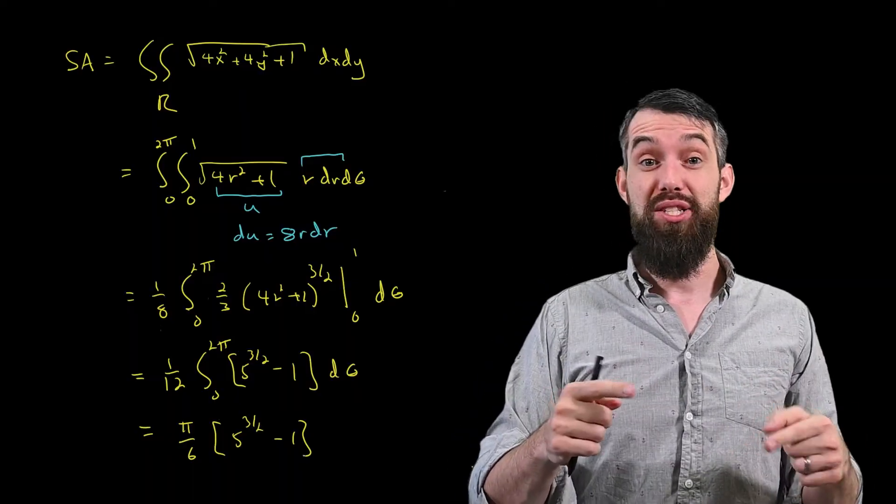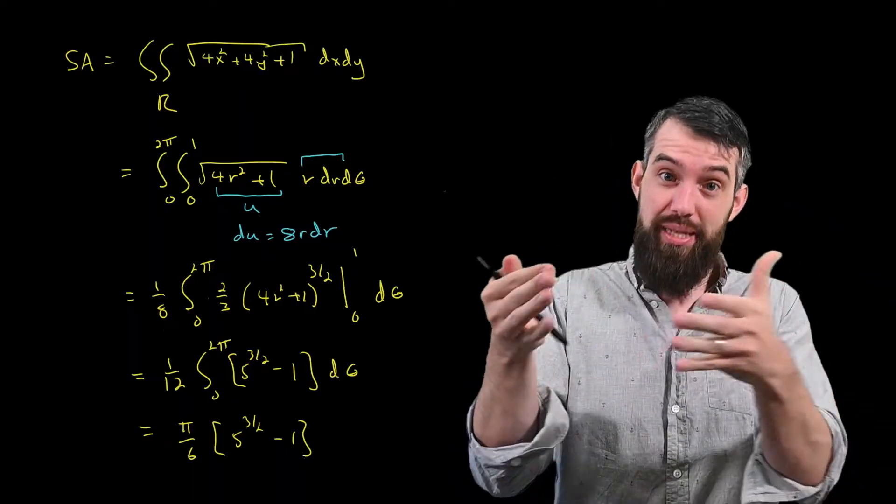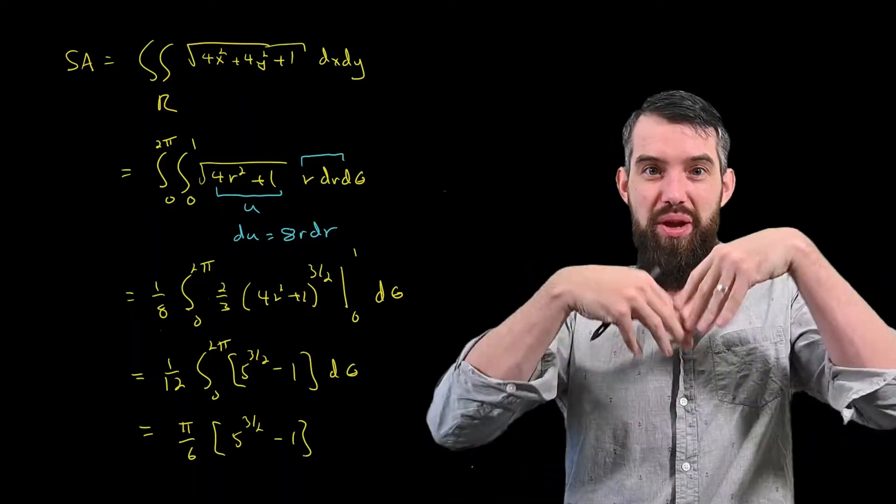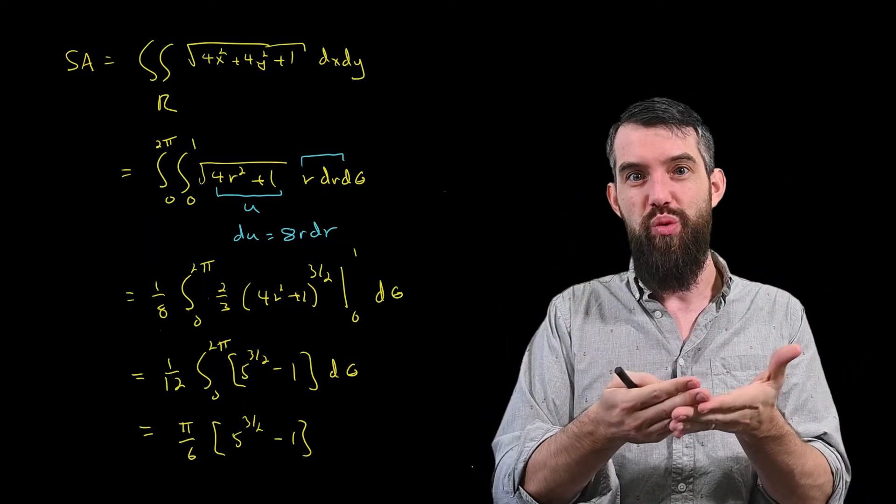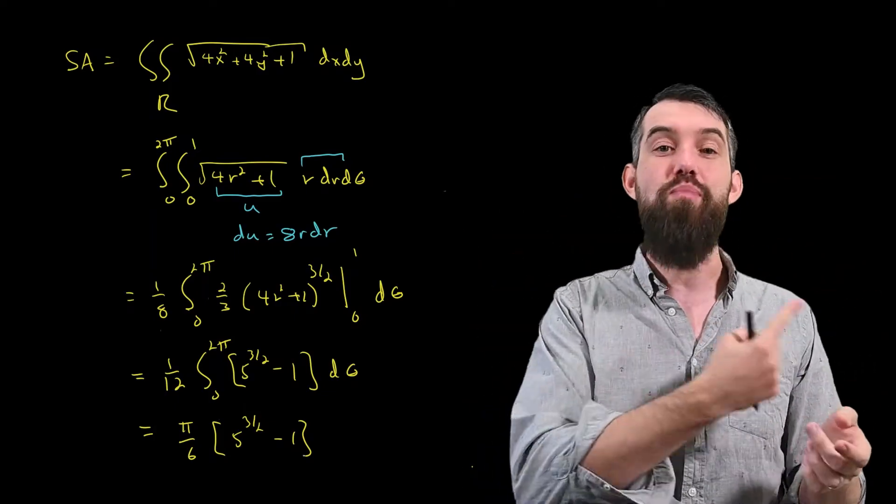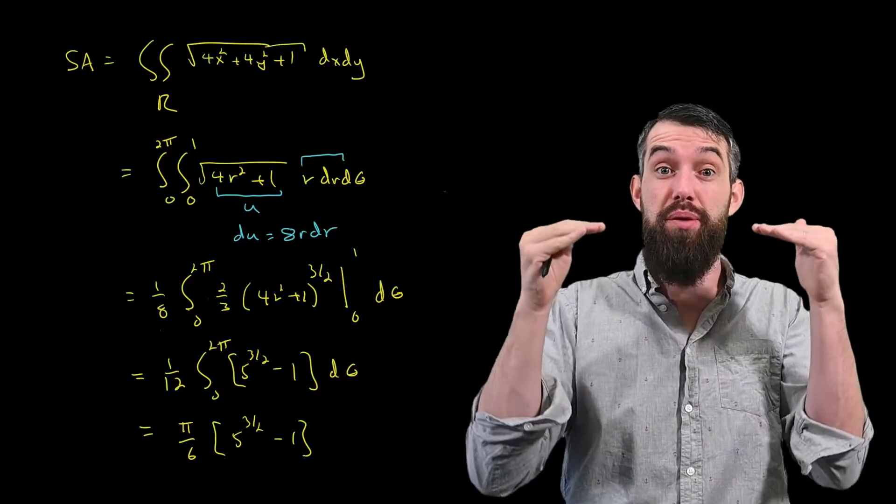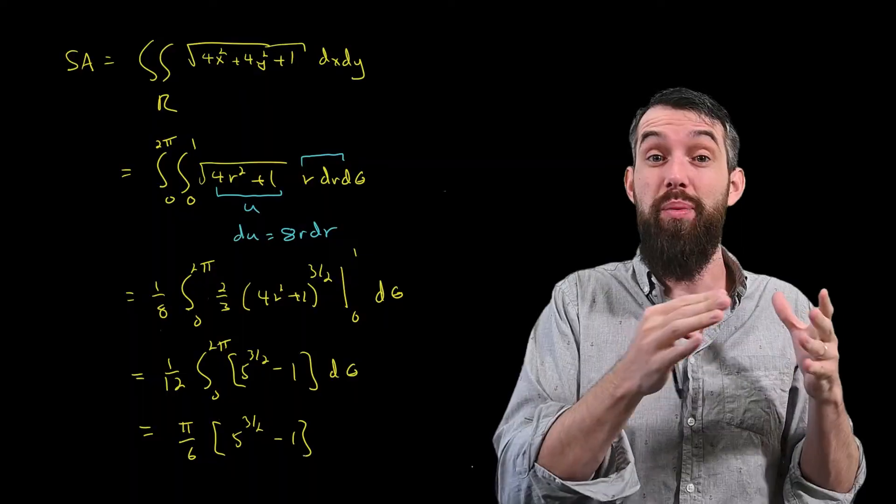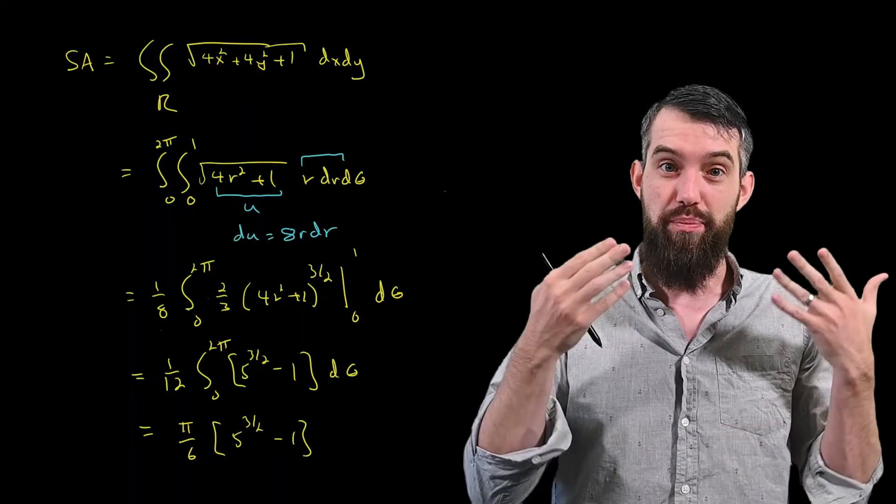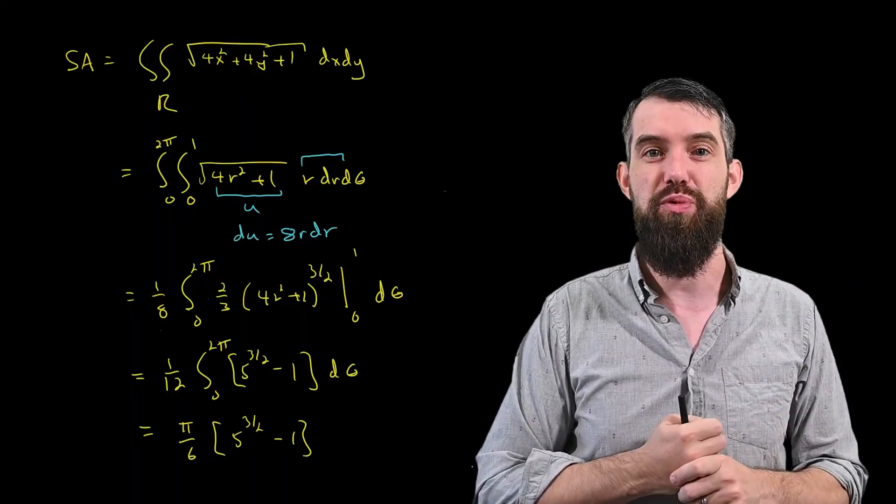So we used the surface area formula for implicit surfaces, and then when we computed everything out, what we got was a Cartesian integral, where the region was just much more natural to be described in polar. And so we converted from Cartesian to polar, normal multivariable methods, and then computed out that final double integral in polar coordinates to get this messy result.